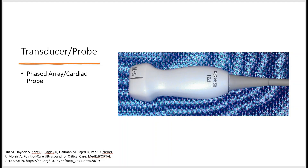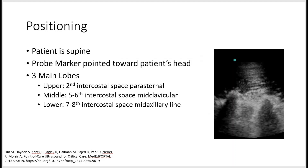The probe I use for lung ultrasound is the phased array or cardiac probe, and I like this probe because we can see deeper structures. Sometimes we can also use the linear probe. In terms of positioning, the patient is usually supine, and the probe marker is pointed towards the patient's head.